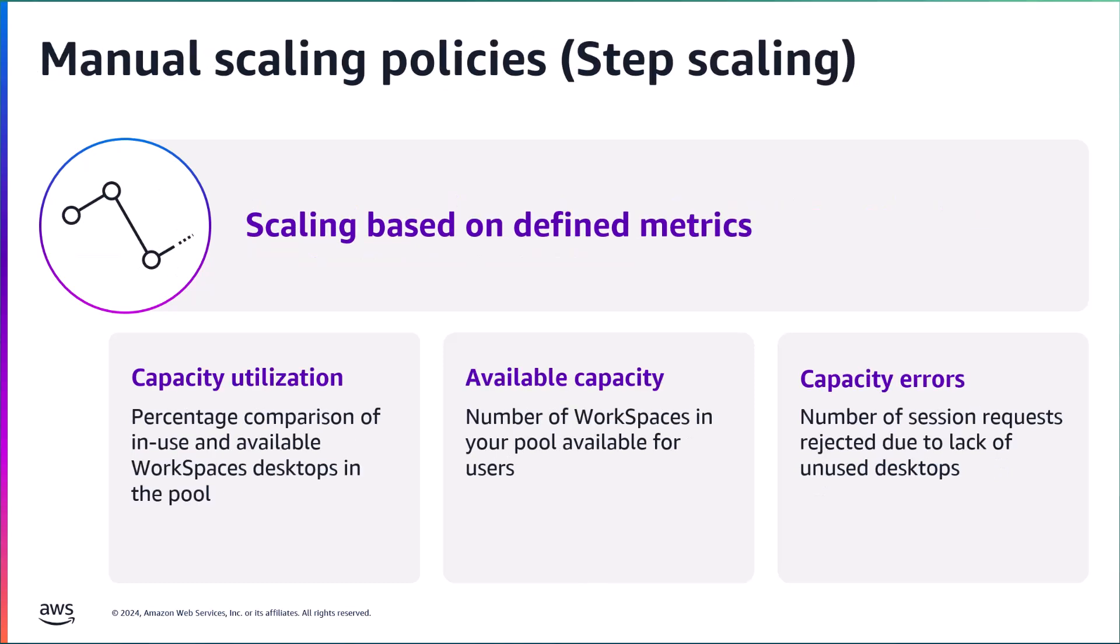The next policy type is a manual or step scaling policy. This type of policy scales your pools in or out based on one of three defined metrics. Capacity utilization compares in-use workspaces against available ones. That percentage then determines when to add or remove capacity. The available capacity metric monitors a number of available workspaces in your pool. You can use this metric to maintain a buffer in your capacity available for users to start streaming sessions.